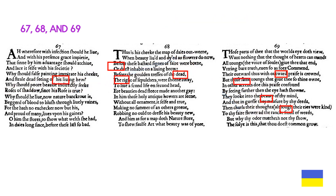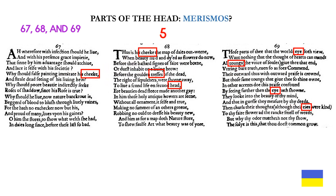These poems are also connected to parts of the head — but is this a true example of merismos? We have cheek mentioned in sonnets 67 and 68. Sonnet 68 shows tresses or hairs of the head, and of course head itself. Sonnet 69 has eyes and tongues. Notice how eye and eyes are spelled two different ways: E-Y-E twice in sonnet 69, and E-I-E-S as the plural in the same sonnet. This is another example of how a spelling difference shows you that something is going on beneath the surface of the poems.